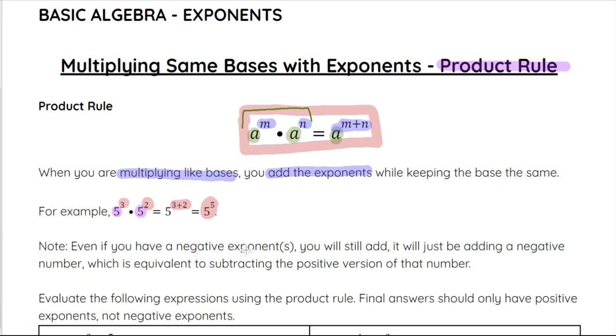Additionally, even if you have negative exponents, you will still use this rule the same way. You will add those together, and we'll see that down here. It's just you'll be adding a negative number and a positive, or maybe two negatives, but it is going to still be addition there.